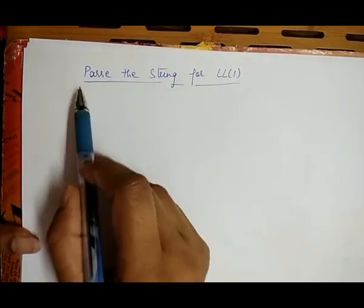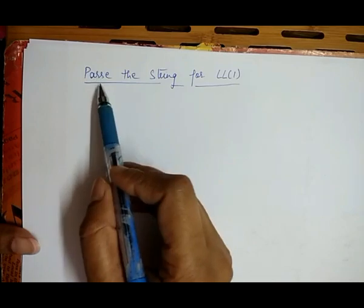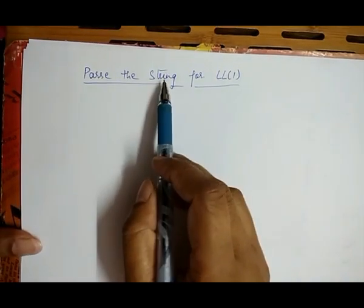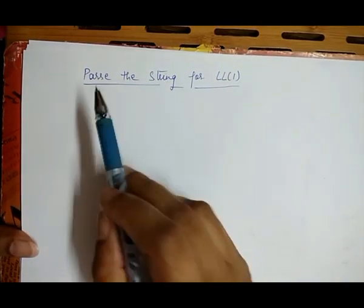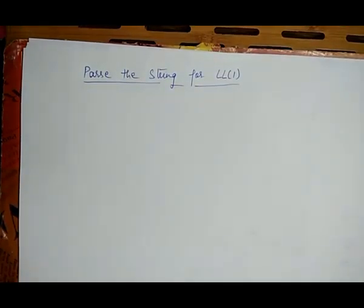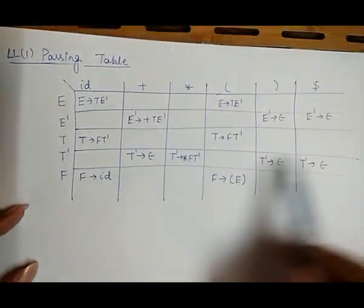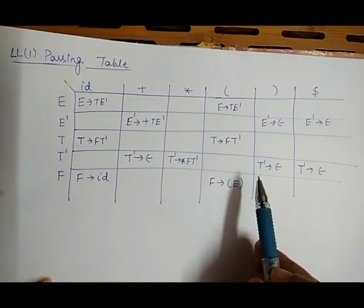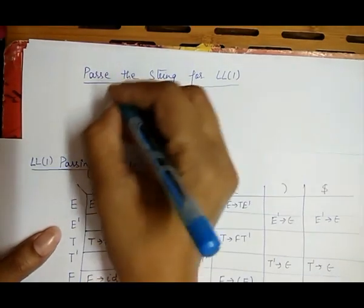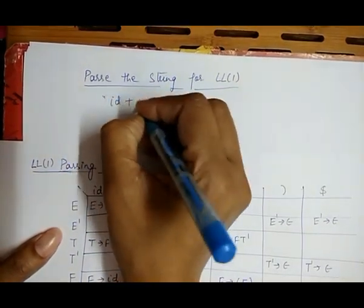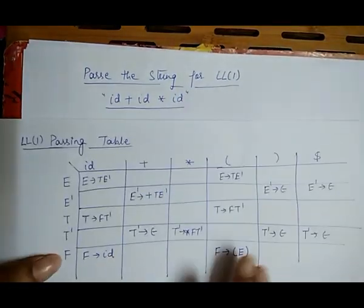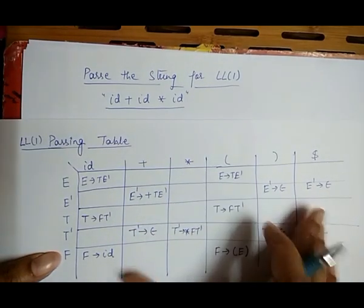Friends, today we discuss the previous video parts A and B of LL1 predictive parser. Now we parse a particular string with the help of the parsing table we already created in our previous video. I take the same example — this is the parsing table we already created. We will now parse a tree for the string: id plus id into id.